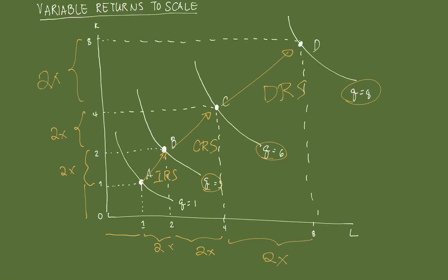So during the entire life cycle of a firm, you can see that it is possible for it to display variable returns to scale.